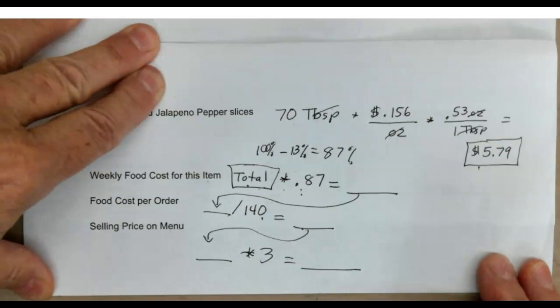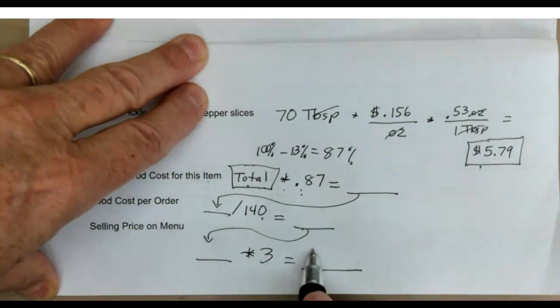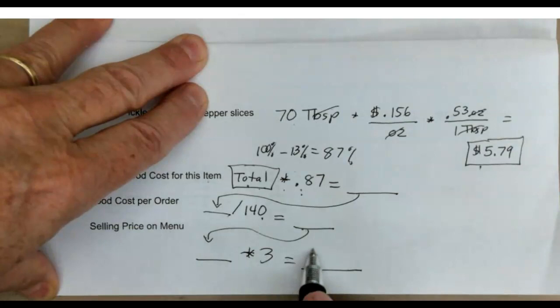That selling price has to cover your costs for other things that aren't food, like for example the rent of the building, the insurance, your restaurant staff. So you basically triple the food cost to set this price. And that is it for that assignment.